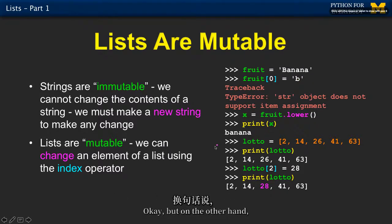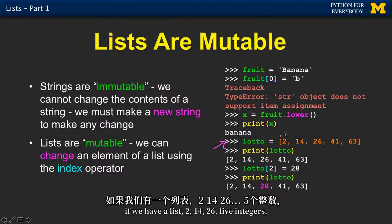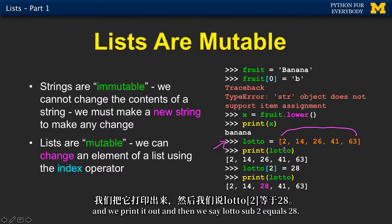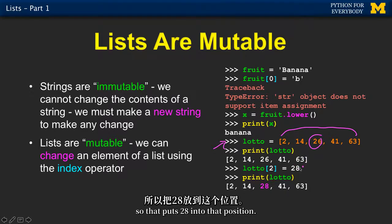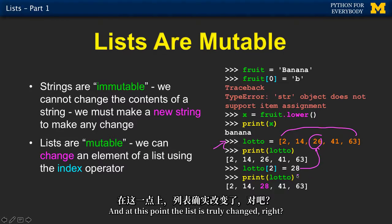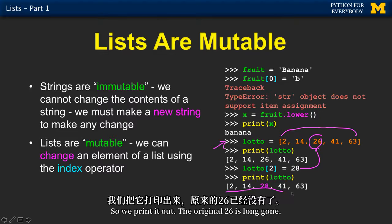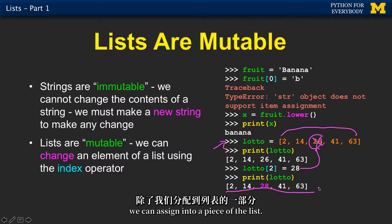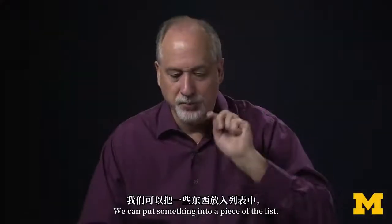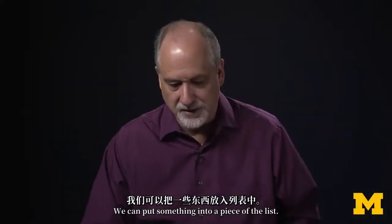But if we have a list — 2, 14, 26, and five integers — and we say 'lotto sub 2 equals 28,' that puts 28 into that position. At this point the list is truly changed — the original 26 is long gone. It's just like any assignment statement, except that we can assign into a piece of the list.